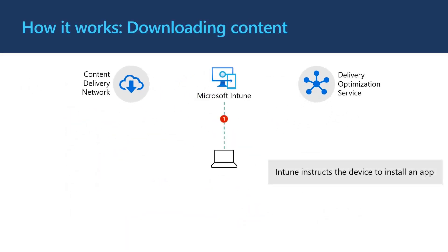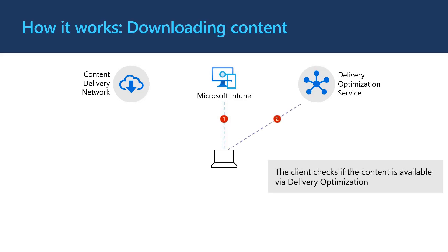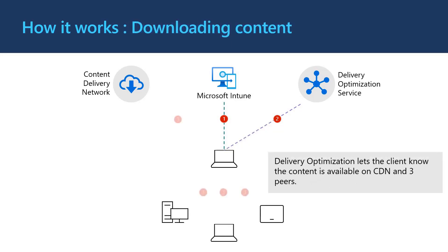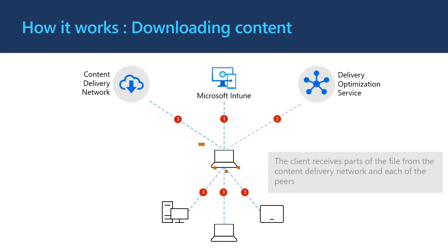Next, we will cover how a client takes advantage of Delivery Optimization during download. When the client is instructed to download content, like in this example, the client reaches out to the Delivery Optimization service to find out if it's available on any peers. In this case, the Delivery Optimization service responds to tell the client it's available on three local peers alongside the content delivery network. The client then uses this information to download parts of the file from the content delivery network and the three peers. You'll notice that while local sources are used, some content still comes from the content delivery network. This is determined based on peer availability and download speed to optimize bandwidth and reliability.